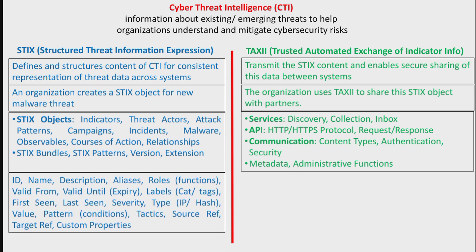The detailed parameters defined in a STIX object include ID, name, description, aliases, roles and functions, valid date and time from, expiry date and time, labels, categories, tags, first seen, last seen, severity, and type — for example, whether it is an IP address or a hash of malware, along with the value of that hash. Additional parameters include patterns or conditions, tactics used by the threat, source references, target references, and custom properties.